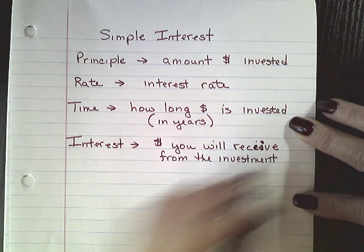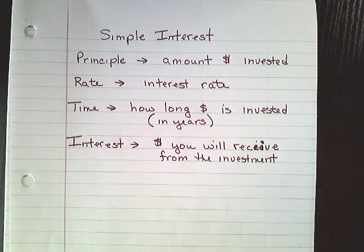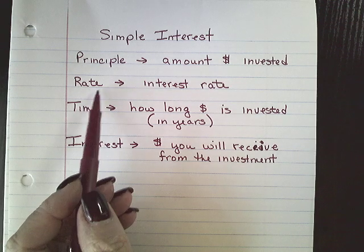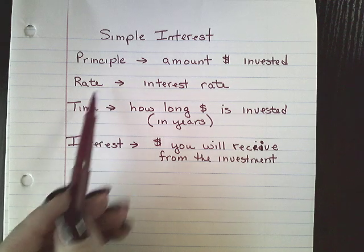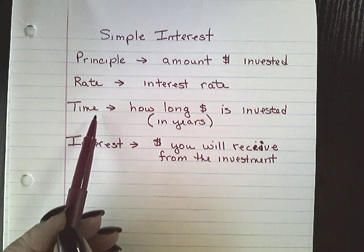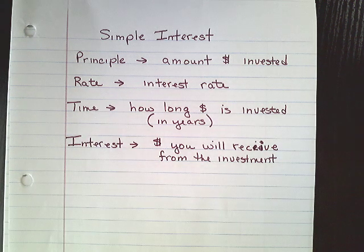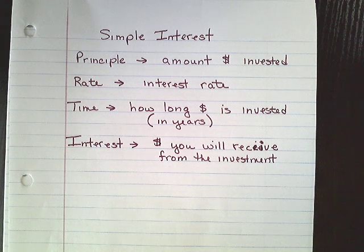So, if you have $1,000 and you want to invest it, you go to the bank and look into a program where you can invest your $1,000. They're going to give you an interest rate that you can earn on that invested money, and if you leave it in there for, say, five years, you want to know how much interest you're actually going to make on that money. Alright, so let's try this.